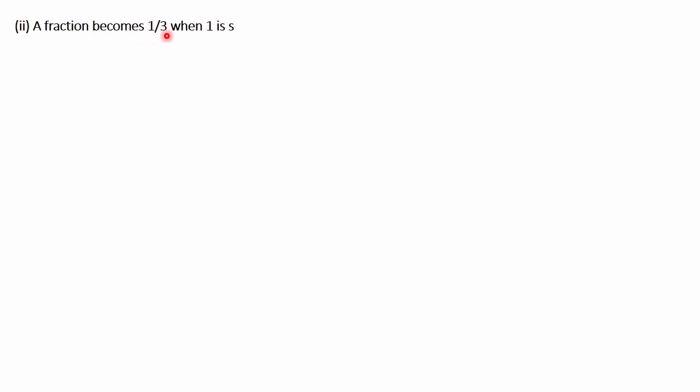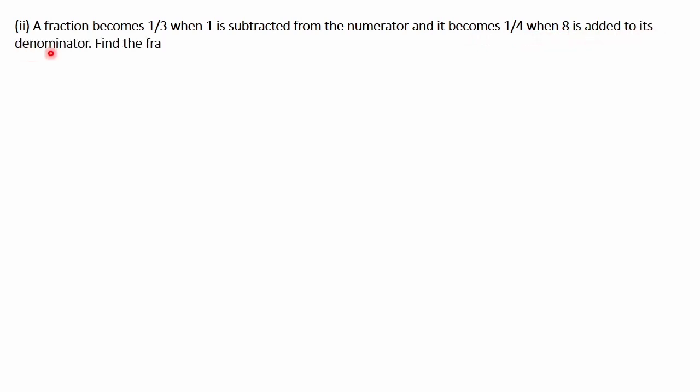Moving to the next question: a fraction becomes 1/3 when 1 is subtracted from the numerator, and it becomes 1/4 when 8 is added to its denominator. Find the fraction. A fraction has both numerator and denominator, so let numerator be x and denominator be y, making the fraction x divided by y.